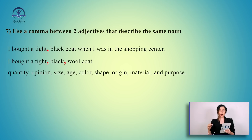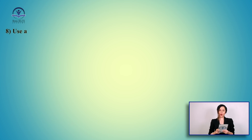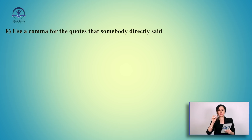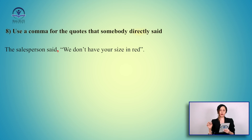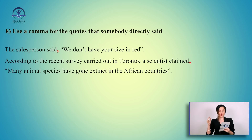And finally, you can use a comma for direct quotes — something somebody directly said. If you want to mention a quote that somebody directly said, you need a comma and then the quote in quotation marks. For example: 'The salesperson said, "We don't have your size in red."' Or: 'According to the recent survey carried out in Toronto, a scientist claimed, "Many animal species have gone extinct in the African countries."' So before the direct quote, you need a comma and then the quotation marks.